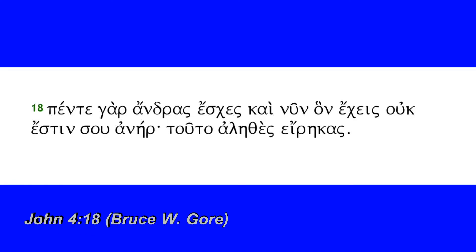Here we have verse 18 of the fourth chapter of the Gospel of John. Jesus is in the midst of his conversation with the woman at the well, and has asked her to go and get her husband, to which she has truthfully responded that she does not have a husband. Jesus responds by saying, 'You spoke correctly, you spoke well, saying that you did not have a husband.'